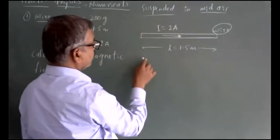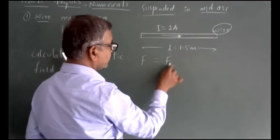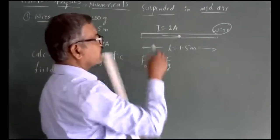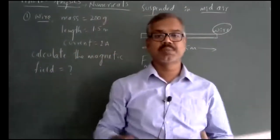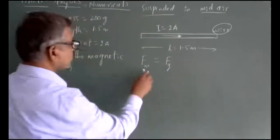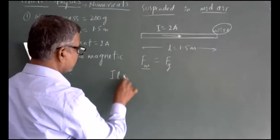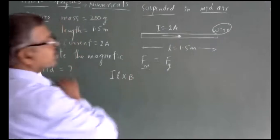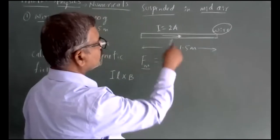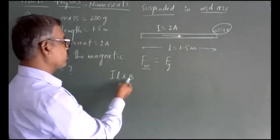Two forces are acting. One is gravitational force, and the other is magnetic force. This magnetic force comes into picture because there is a current in a wire and because of its length. This magnetic force, as we know, is given by F = IL × B.